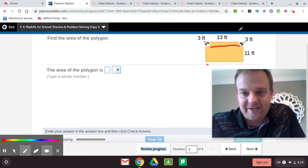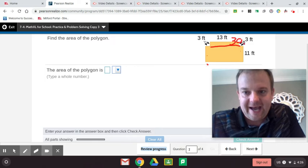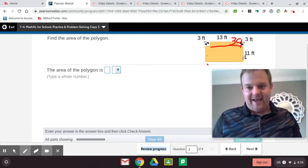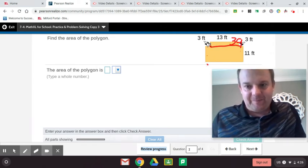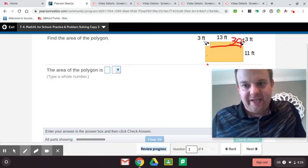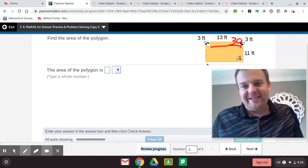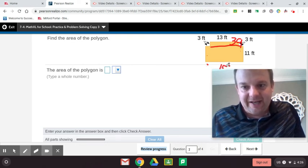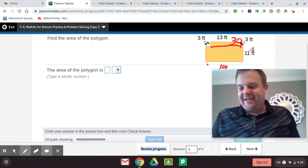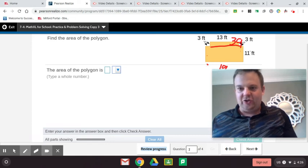We have three times 13. That's 39 guys. So 39. And now we need to find this area. This is 11 times what? We're going to add that. So in order to do this, we have three plus 13, plus this three. 13 plus three is 16, plus three is 19. So this is 19 right here. So now we do 19 times 11. 19 times 11 is 209.